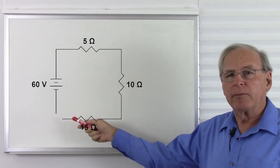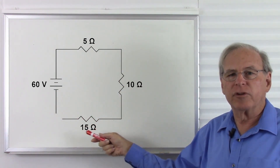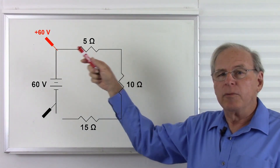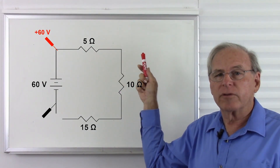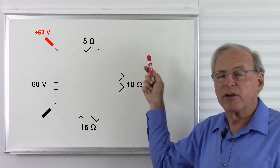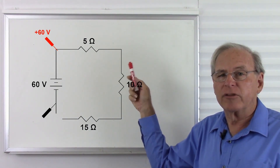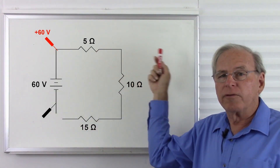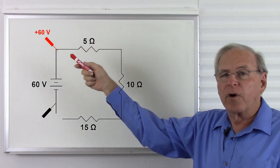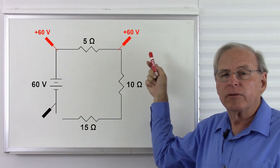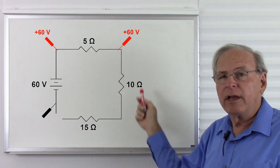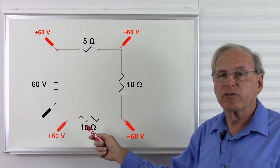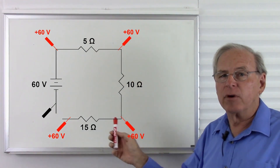Now let's go back to our original circuit, except I'm going to break the circuit right here — there's no connection from this resistor back to the battery. To have voltage across a resistor, we must have current plus resistance. There is no current flowing because there's a break in the circuit, so there can be no voltage difference. Therefore, with no current flowing, the voltage is the same everywhere in the circuit.